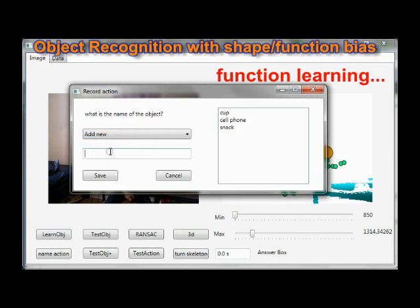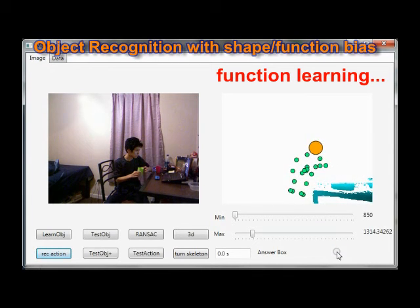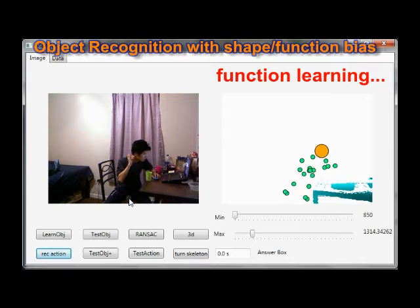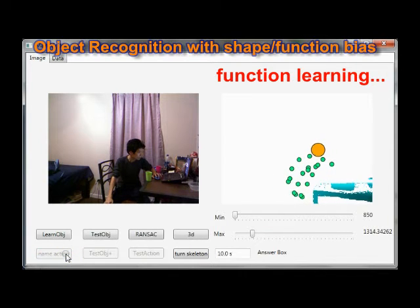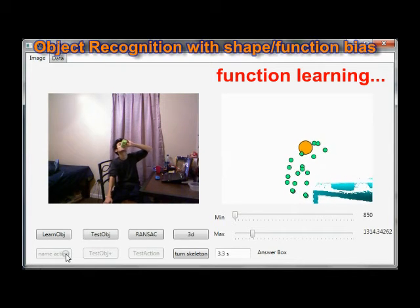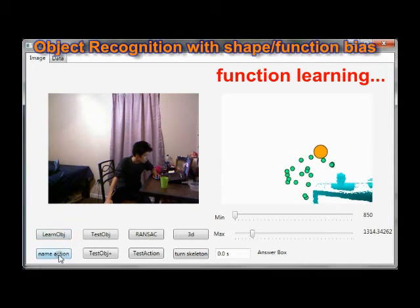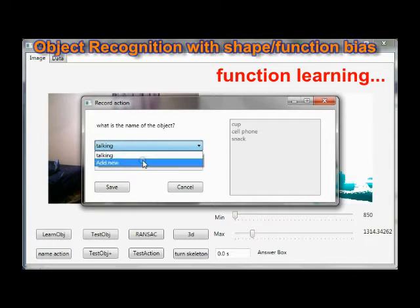You will write the name of the action and choose the name of the object associated with the action. The system is now ready to look at the object.